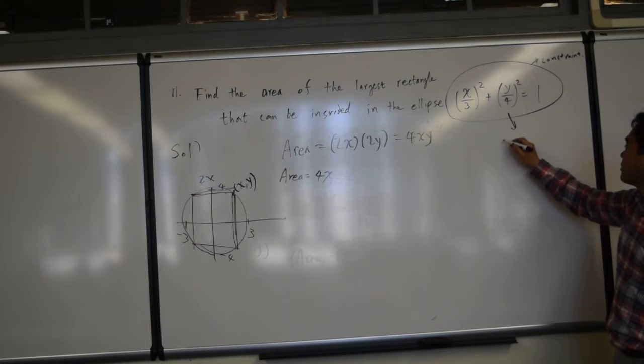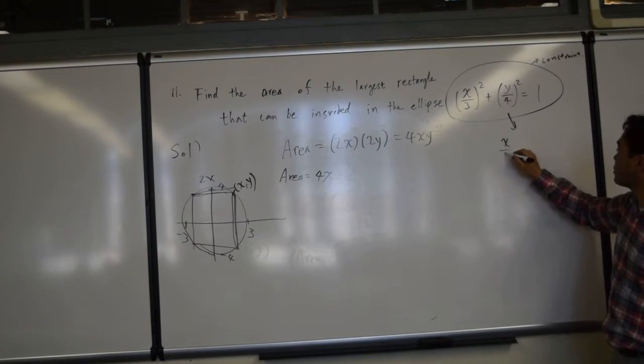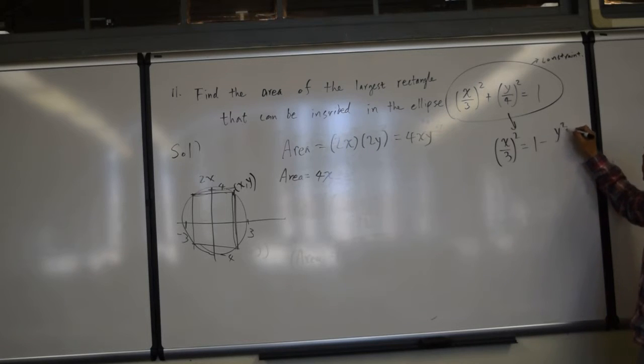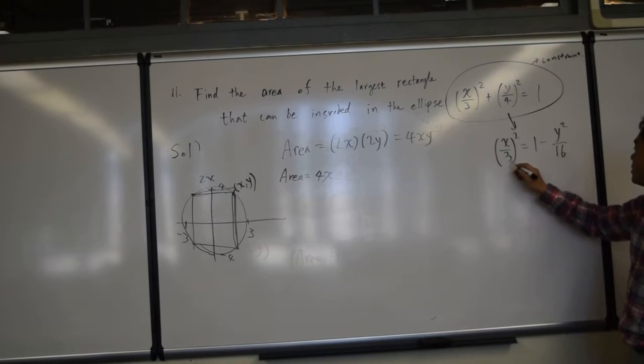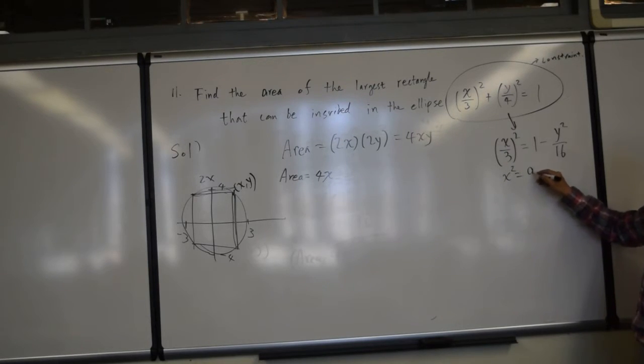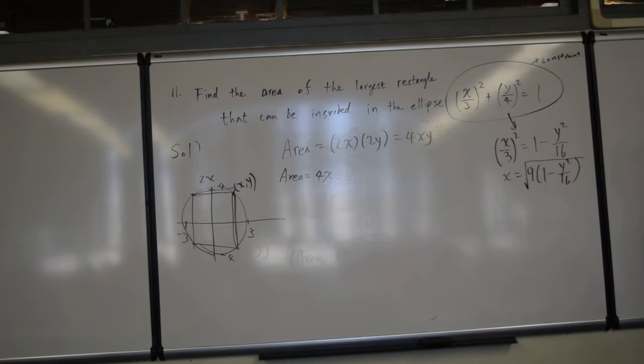So if you have x over 3 squared equals 1 minus y squared over 16, then x squared is therefore 9 times 1 minus y squared over 16, and then you take the square root, and that's what you get.